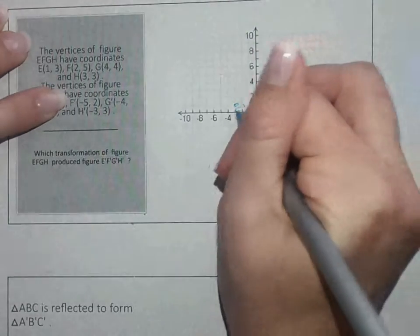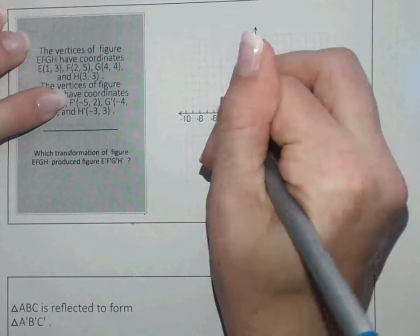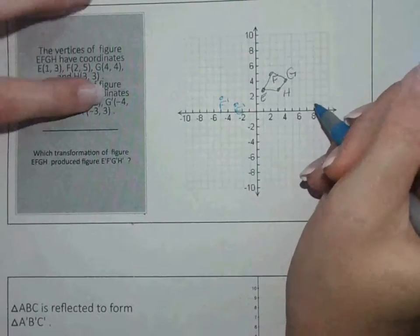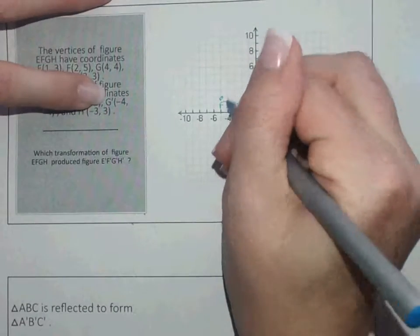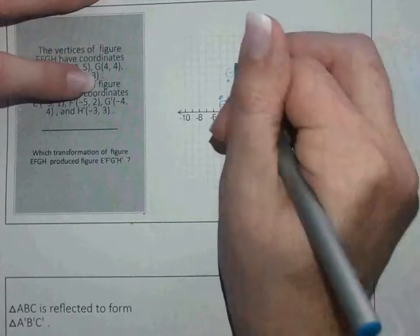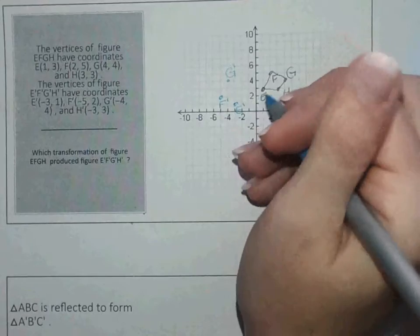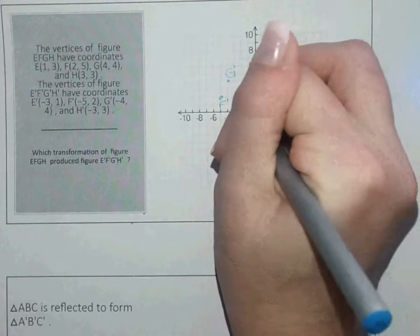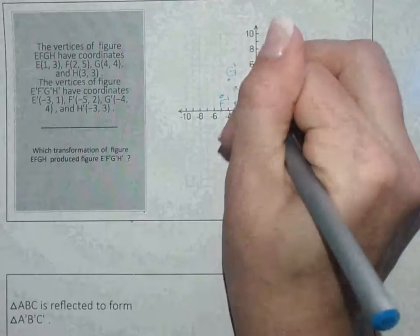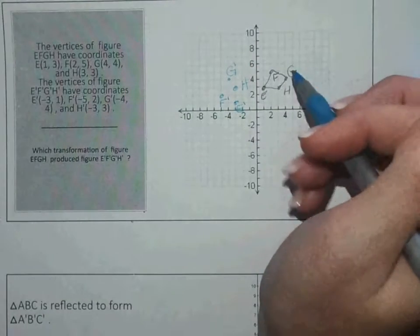F-prime of negative 5, 2. G-prime of negative 4, 4. And H is negative 3, 3.